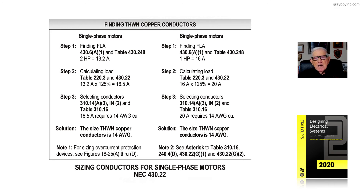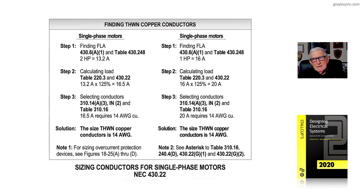According to the asterisks in the 2017 edition — or the notes in the 2020 edition — 240.4D would require a 20-amp circuit on a 20-amp overcurrent device if that allows the motor to start and run. Right now we're only reviewing how to select the conductors to supply the motor from the overcurrent device in the panel, routed through the raceway to the motor. That's what Figure 18-1 illustrates: sizing conductors for single-phase motors per NEC 430.22.